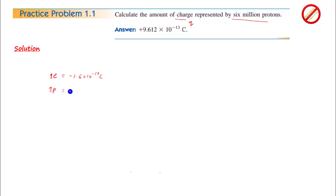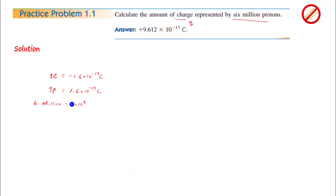तो यही values जो हमारे पास होंगी, वो positive में होंगी। So value हमारे पास एक proton की आएगी। अब जो हमारे पास given है, वो है six million protons. Million की जो value होती है, वो है one into ten raise to power six. So six million के लिए यह होगा six into ten raise to power six. So यह हमारे पास six million protons की value है।